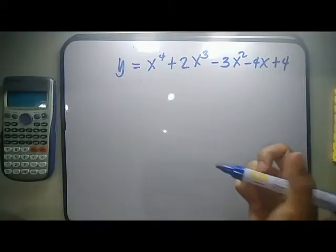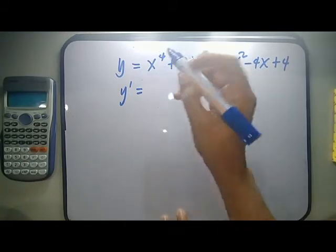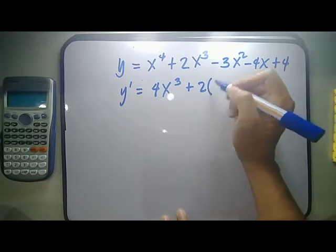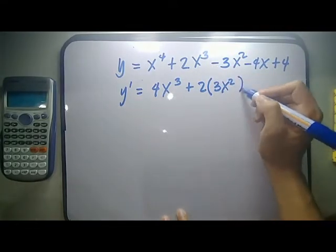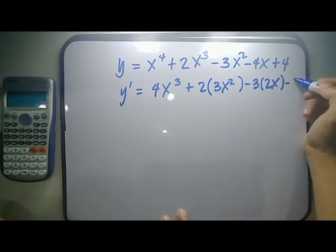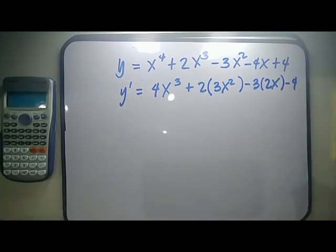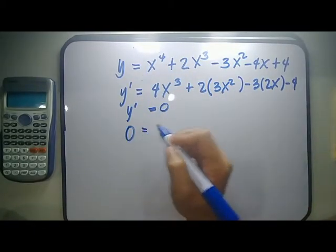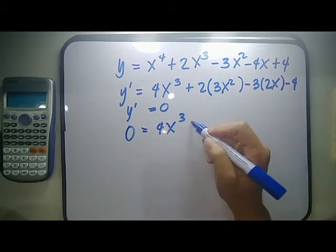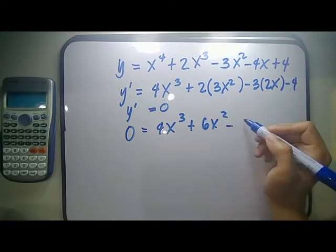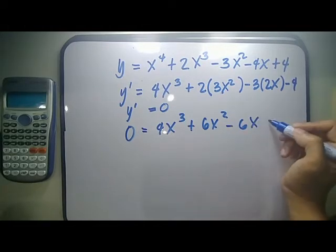The first step is to find y prime. So y prime equals, using the power formula, this is 4x cubed plus — you have 2 times 3x squared — minus 3 times 2x, minus 4, so plus 0. That gives us y prime equals 4x cubed plus 6x squared minus 6x minus 4.